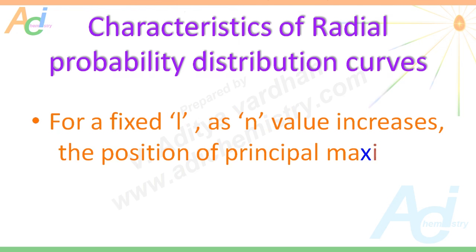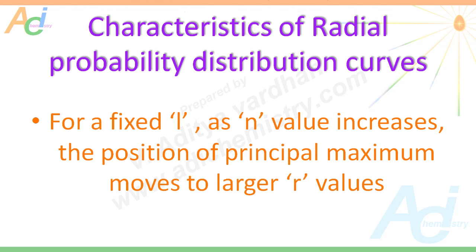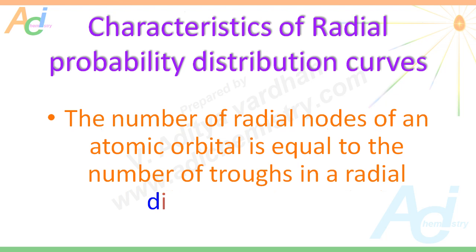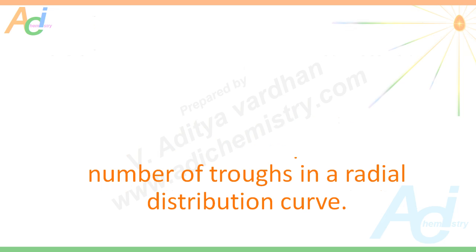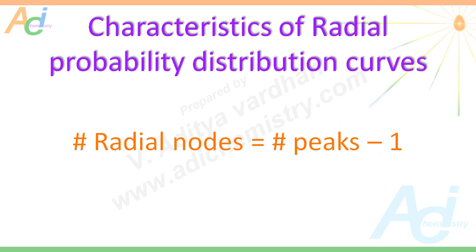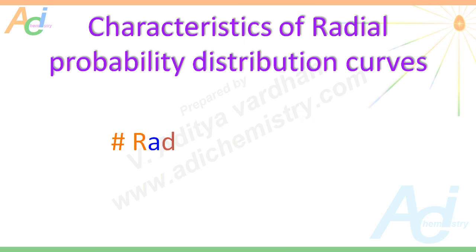And in general, as n value increases for a fixed l value, the position of the principal maximum moves to larger r values, though this is also not always followed. The number of radial nodes of an atomic orbital is equal to the number of troughs in a radial distribution curve. Thus, the number of radial nodes equals the number of peaks minus 1. Alternatively, the number of radial nodes is given by n − l − 1, where n is the principal quantum number and l is the azimuthal quantum number of the atomic orbital.